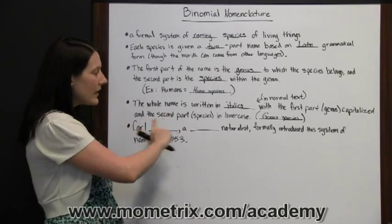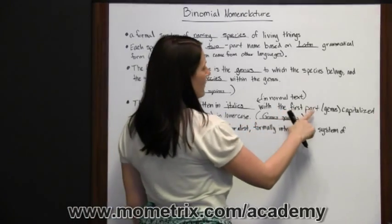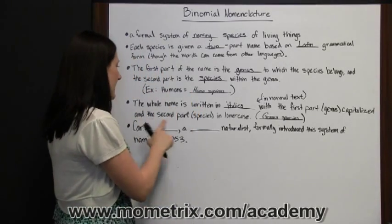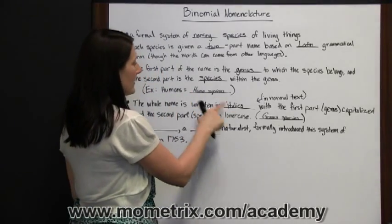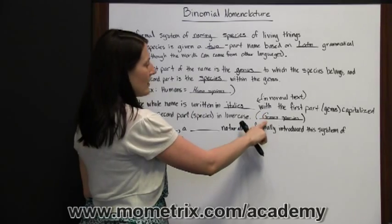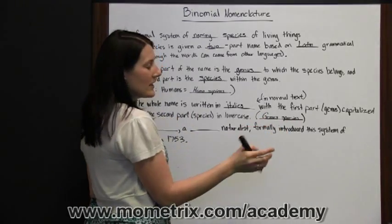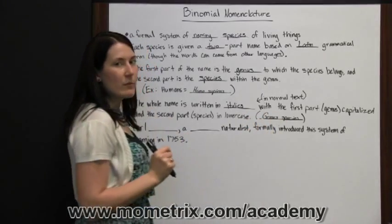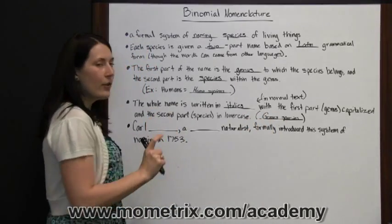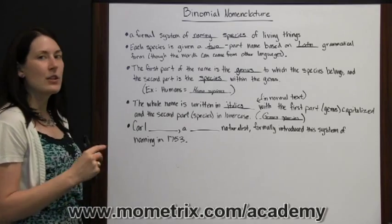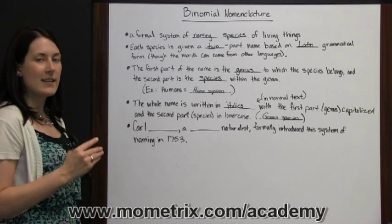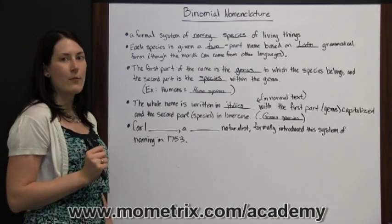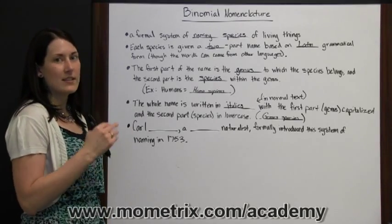It's written in italics with the first part — the genus — capitalized, and the second part — the species — in lowercase. So for any genus and species, the genus will be capitalized, the species will be lowercase, and the whole thing will be in italics, unless the sentence or paragraph is already in italics and you have to set it off from the rest.